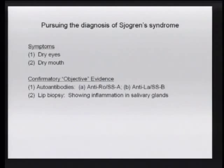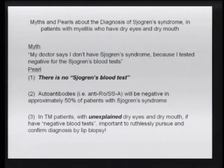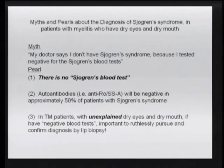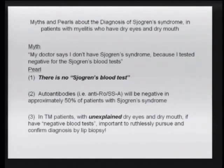Myths and pearls about the diagnosis of Sjogren's syndrome: we see this all the time — my doctor says I don't have Sjogren's syndrome because I tested negative for the Sjogren's blood test. Just as there is no blood test for lupus, there is no definitive Sjogren's blood test. The autoantibodies SSA and anti-Ro are actually going to be negative in 50% of patients with Sjogren's syndrome. So it is absolutely imperative that when myelitis patients are screened for a rheumatic disease, if you have dry eyes and dry mouth with no other explanation, doctors should not stop at a negative blood test. If the blood test is negative you absolutely need to pursue the diagnosis by obtaining a lip biopsy.